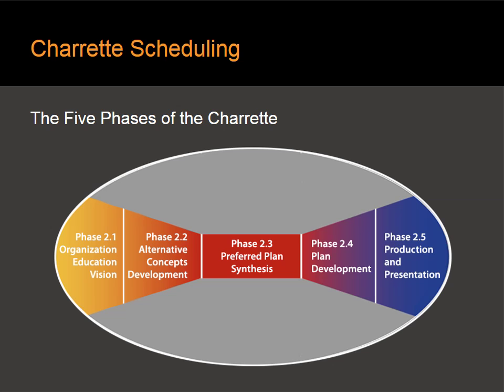The five phases of the Charette itself start with organization, education, and creating a community vision. Then the team in Phase 2 moves into creating alternative concepts, followed by creating the preferred plan by synthesizing those concepts, followed by developing the plan, and finally producing and presenting the Charette plan. Within this, you're looping in the feedback loops with the stakeholders.